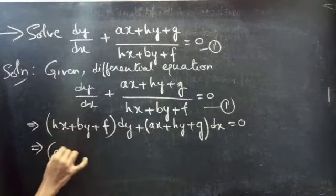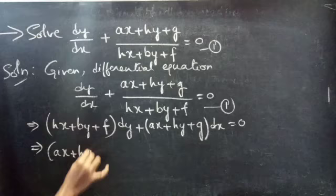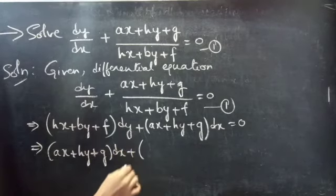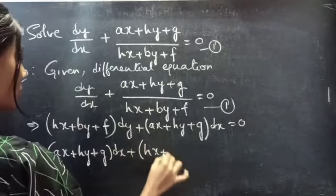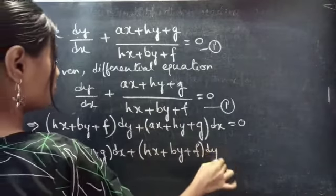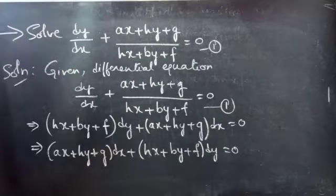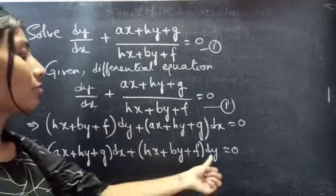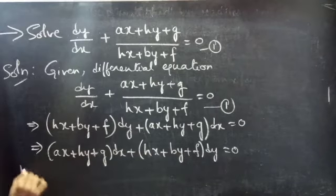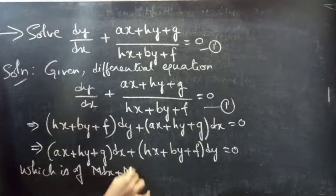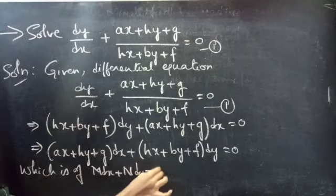Again, you can write it as (ax plus hy plus g) dx plus (hx plus by plus f) dy equals 0, which is of the form mdx plus ndy equals 0.